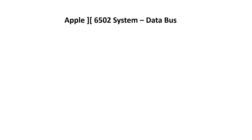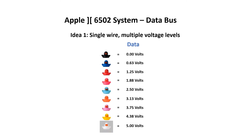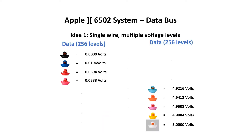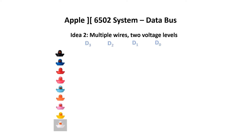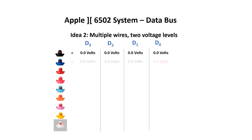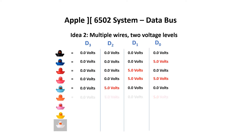Now we need to figure out a way of representing data on the data bus. One way would be to use a single wire and have multiple voltages — this is essentially how an analogue computer works. But it's very difficult to implement and extremely sensitive to noise. The real problem is that it just doesn't scale very well. For 256 different values over 5 volts, the individual levels are just 0.02 volts apart, which is just 20 millivolts. So instead, basically all computers use a digital system where the data is represented across multiple wires.